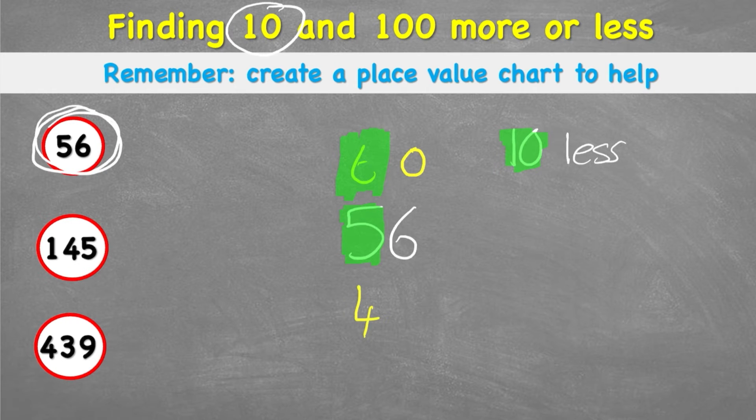So now that I have this 4, I can then look back into the ones column and see that I have a 6. Bring that down because we're not changing anything in our ones column. And my final answer is 46. So 10 less than 56 is 46.